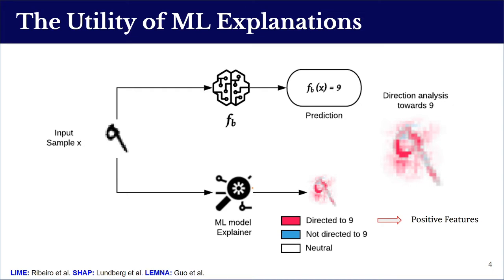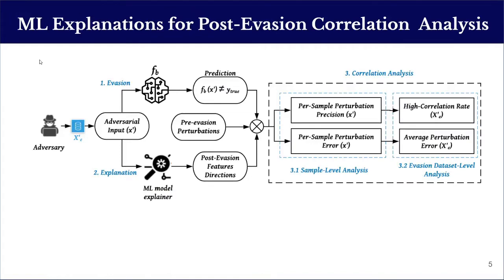Blue pixels are called negative features, and white pixels are neutral to the classification decision. Our diagnosis are guided by the post-evasion feature directions returned by the machine learning explainer. We assess the effectiveness of a single feature perturbation by comparing its direction with respect to the desired label fixed by the adversary. Therefore, we employ machine learning explainers on the adversary's input in order to detect the direction of each perturbed feature.